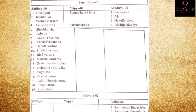Sannipataja netrarugas are 25: 19 sadhya, 2 yapya, and 4 asadhya. The 19 sadhya include: utsangini, kumbika, vartma sharkara, shova vartma, shushka, arabuda, aklinna vartma, abandha vartma, bahala vartma, shava vartma, kardama, sashopakshi paka, sashopaksha puyalaka, prastaryarma, adhimantha, sirajatma, snayu arma, and sirajatika. Yapya 2: sannipataja kacha and pakshmakopa.